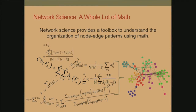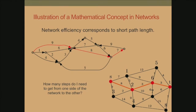Network science provides a toolbox for understanding the organization of these node and edge patterns. Every system we look at has a different set of nodes, a different set of edges, and a different pattern of interconnections. We're trying to use math to understand what that organization is — what is the pattern, how can we describe it, how can we predict it, and ultimately how could we manipulate it to potentially change circuit behavior? I'm going to give you two illustrations of how this can work, and the first is an illustration of a concept called network efficiency.